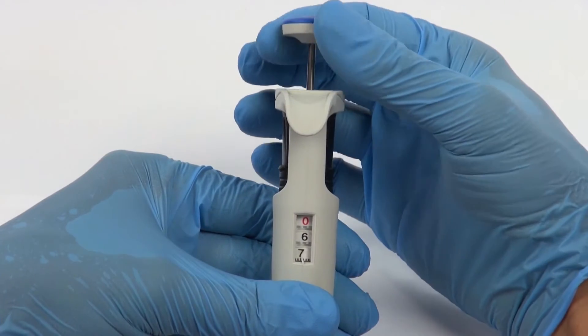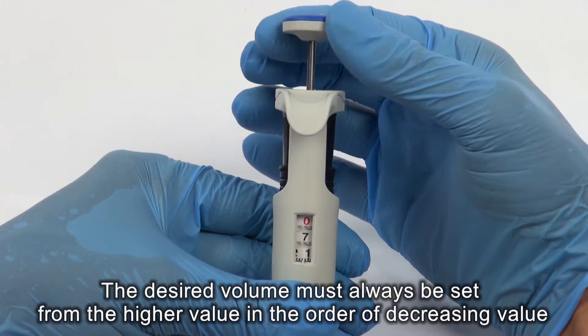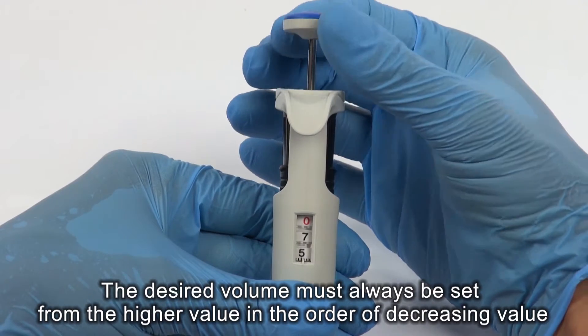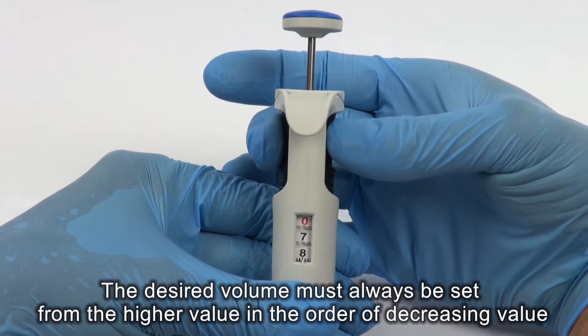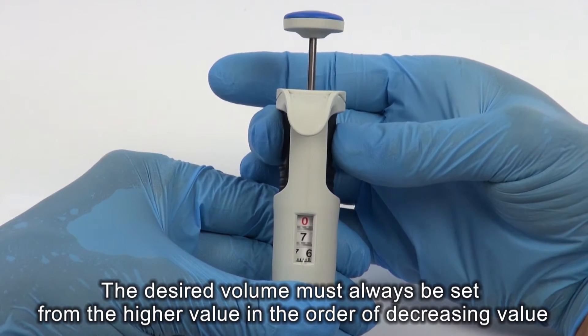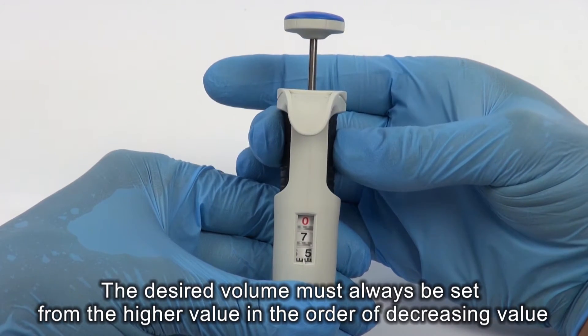If the desired volume is higher than the set volume, turn the pipetting push-button, increasing the value until the lower figure wheel comes one-third of a turn beyond the required setting, and then slowly backward.